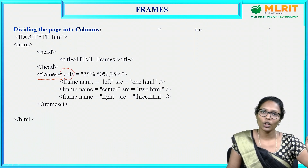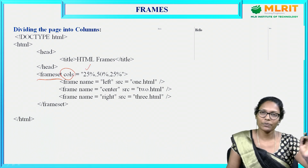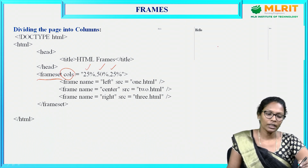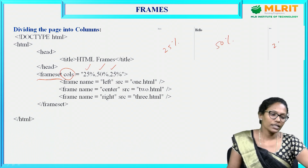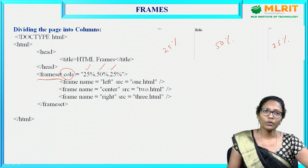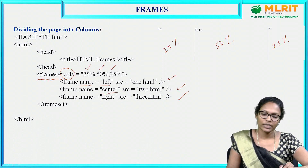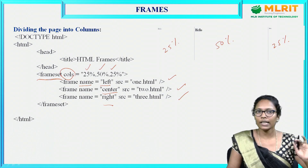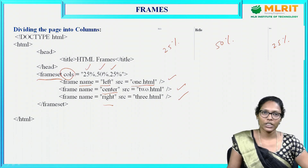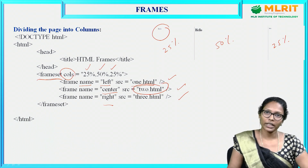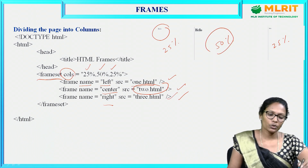In this example, the frameset is divided into three columns: the first column is 25%, the second is 50%, and the third is 25%. Three frames are added with names 'left', 'center', and 'right'. The first frame displays 1.html, the second displays 2.html, and the third displays 3.html — all of which are pre-written HTML files with some content.